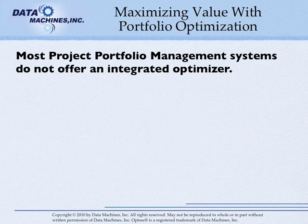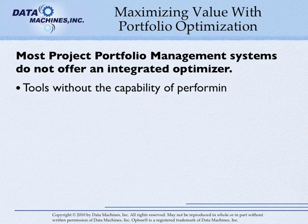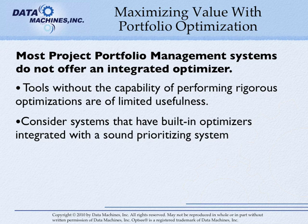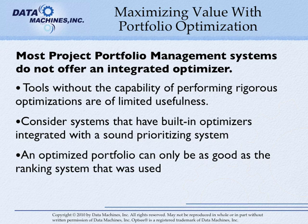Unfortunately, most project portfolio management systems do not offer an integrated optimizer that can perform rigorous optimizations against multiple constraints. A project portfolio management tool that ranks projects without the capability of performing rigorous optimizations is of limited usefulness. You should consider systems that have built-in optimizers integrated with sound prioritizing systems. Remember, an optimized portfolio can only be as good as the ranking system that was used to consider the projects.